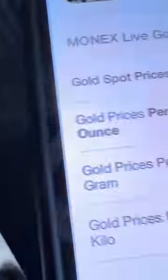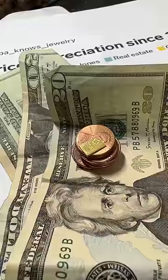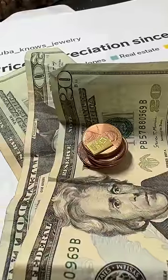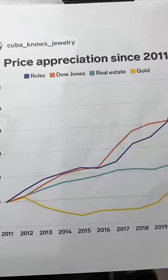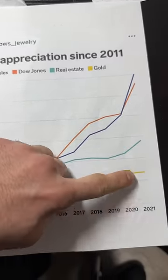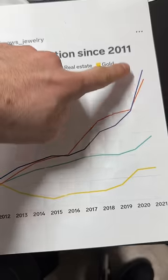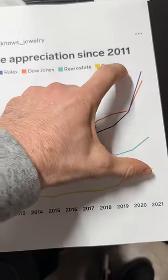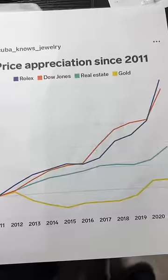Now each individual gram of gold at today's market price is $60.09 in cash. The interesting point is that the price of gold is behind the price of the Rolex, the stock market, and even real estate, so it has a lot of room for appreciation.